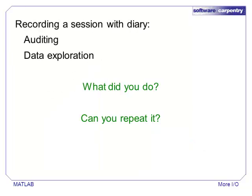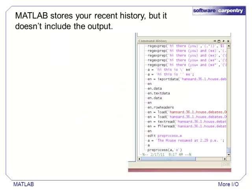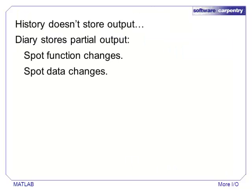Another important use of printed output is for auditing during data exploration. If you are exploring several kinds of analysis, journaling with the diary function can help keep track of what commands were run and what their output was. MATLAB always tracks the history of commands run from the standard prompt, accessible from the history screen or by typing the up key at the prompt. History stores what commands we ran, but it does not store a transcript of the actual output. Using diary, we can find changes to output that might be caused by changes to functions or data files.